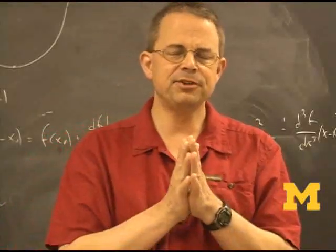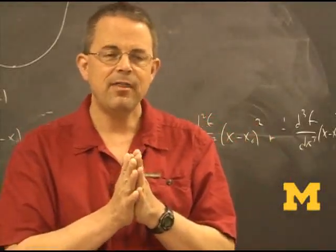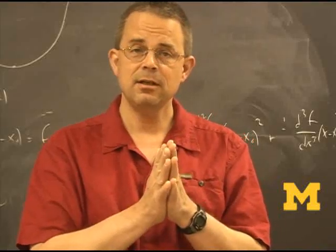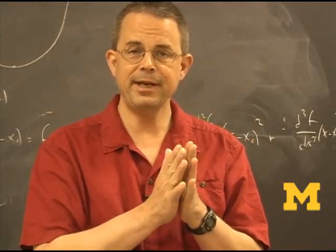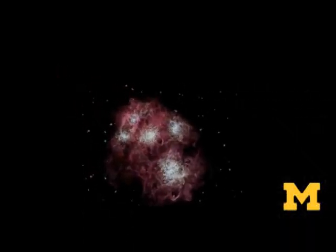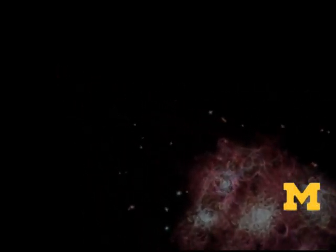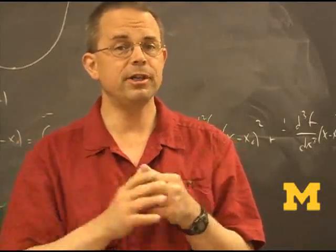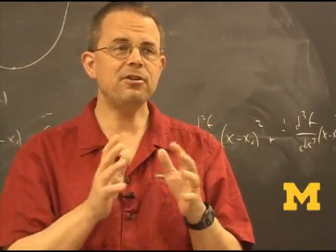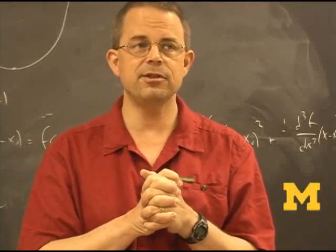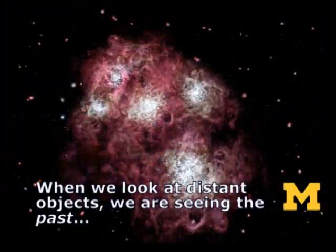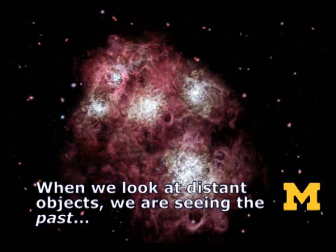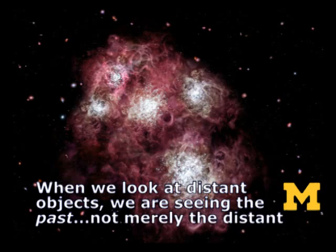This fact that light travels at a finite speed means that we get to see the history of the universe laid out around us. When we look farther and farther out in space, we're actually looking farther and farther back in time. This allows us to see how things have changed during the history of the universe. So that's the first piece you need to understand to understand cosmic expansion. That when we look at distant objects, we're seeing the past and not merely the distant.